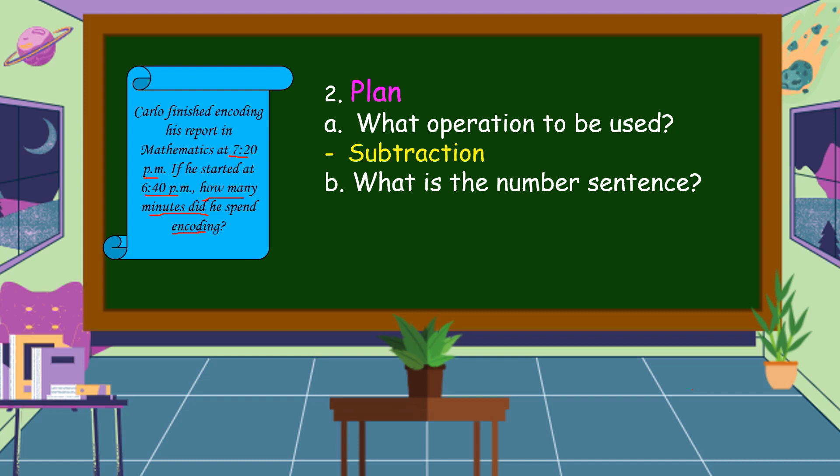What is the number sentence? The number sentence is 7:20 minus 6:40 is equal to N.